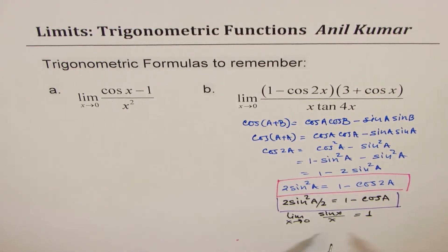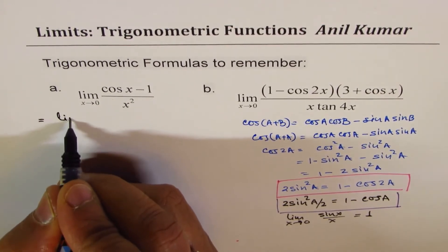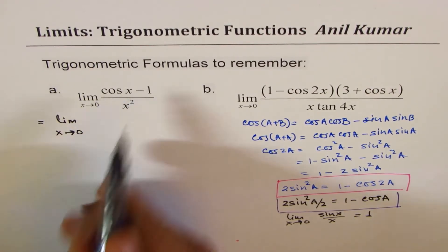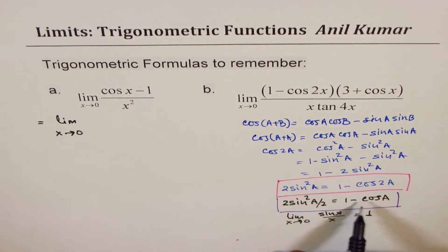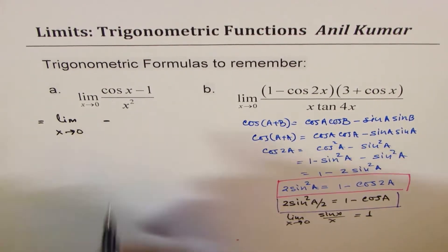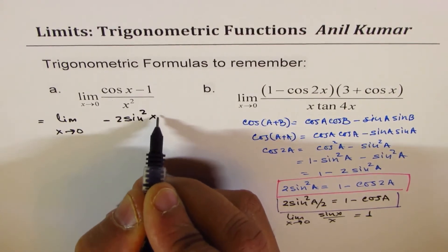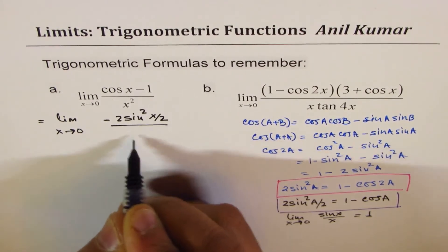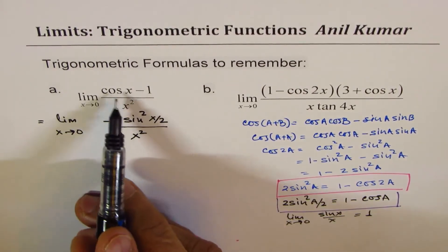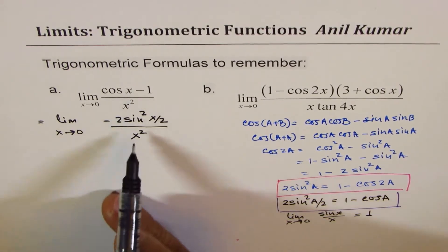So that is the strategy. Let's begin with what is given to us. I could write this as limit x approaches 0 of cos x minus 1. This is 1 minus cos a but negative. So here we'll have negative of 2 sin squared(x/2), and we have x squared. It is cos x minus 1, not 1 minus cos x, so if I do negative then I get this.